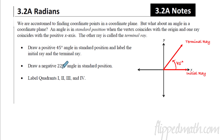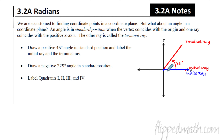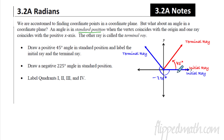Next: draw a negative 225-degree angle in standard position. The initial ray starts at the same position — on the x-axis from the origin. For negative angles we go in the other direction — down into the negatives. Going down 90 degrees gets us here, another 90 brings us to 180, and negative 225 would be about there. We label the arc as negative 225 degrees and label our terminal ray. This shows how we can draw angles in standard position: 45 degrees goes up, negative 225 goes down and wraps around.